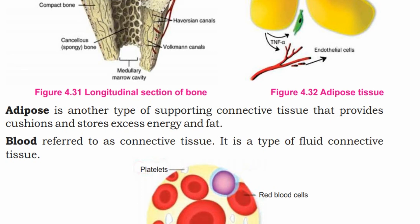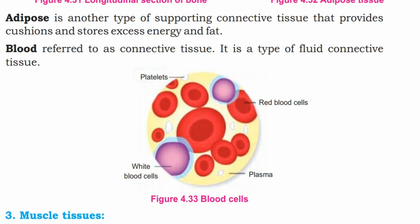Blood is also referred to as a connective tissue — it is a type of fluid connective tissue because blood is liquid. Blood is composed of blood cells, plasma, white blood cells, platelets, and red blood cells.